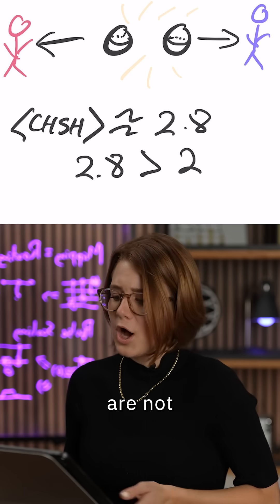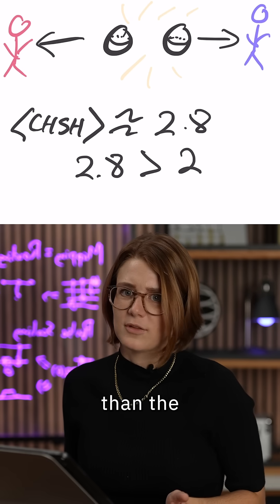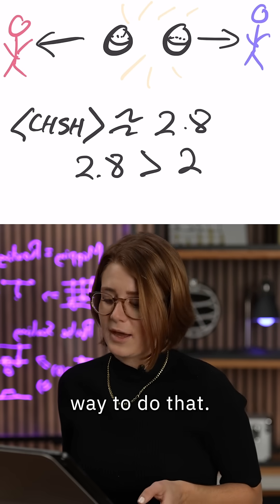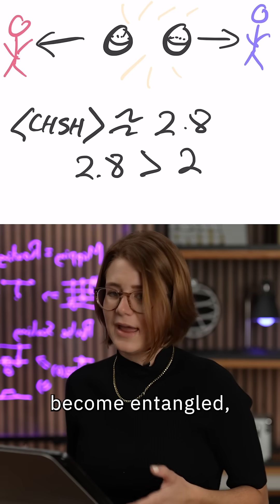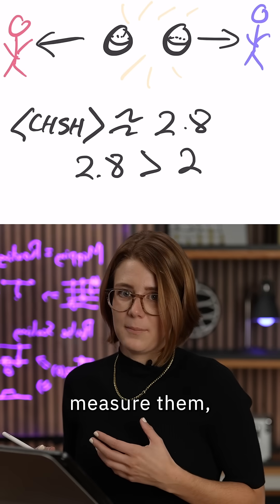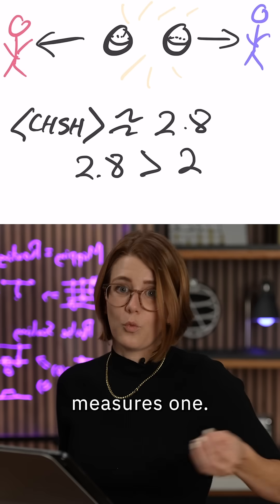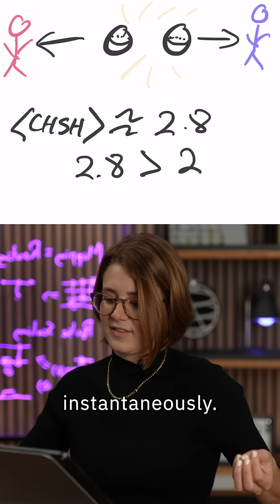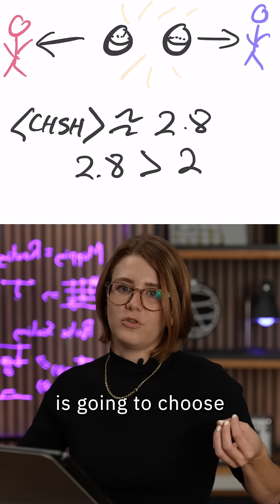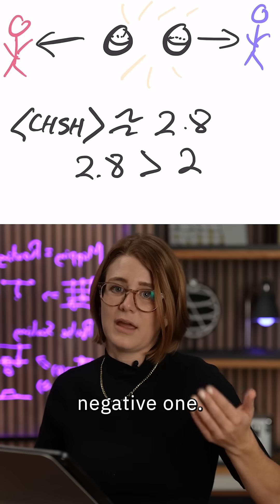Bob and Alice are not communicating with each other faster than the speed of light. There's no possible way to do that. The particles become entangled and when you measure them, say Alice measures one, we know that instantaneously the other particle is going to choose the opposite correlated value, negative one.